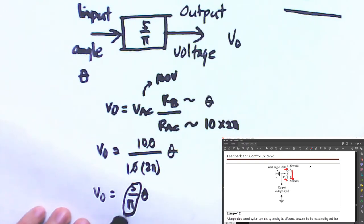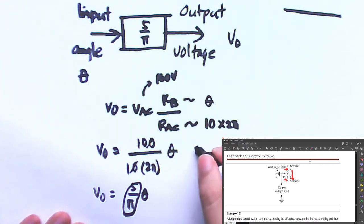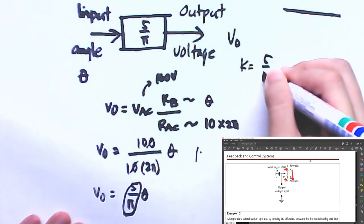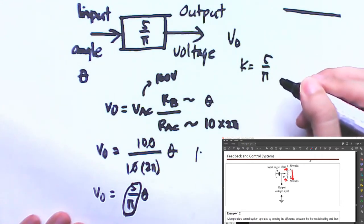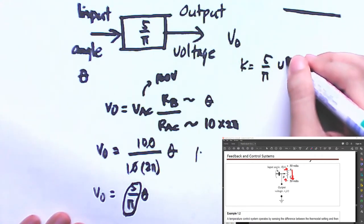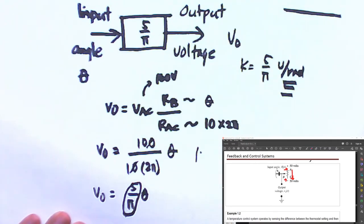This is the expression we found. By the way, the gain K we identified here is actually 5/π, which is in units of volts per radian. It's important that we also specify the units.